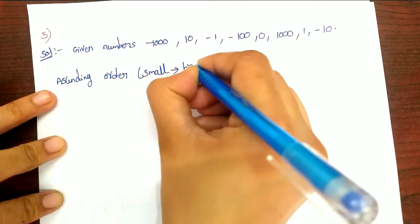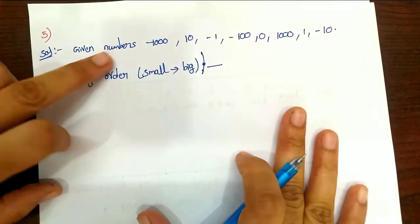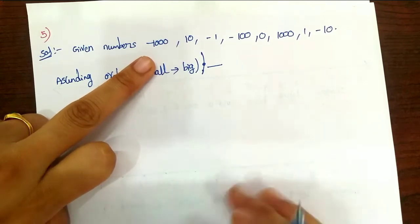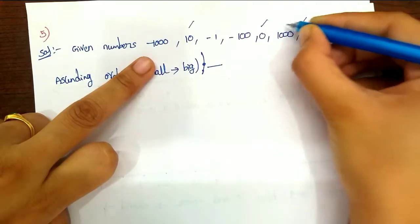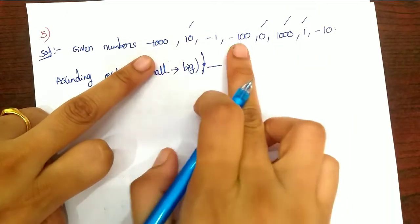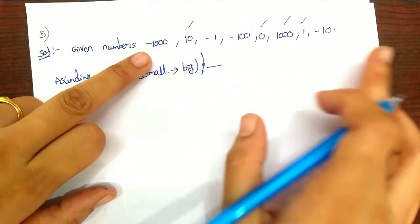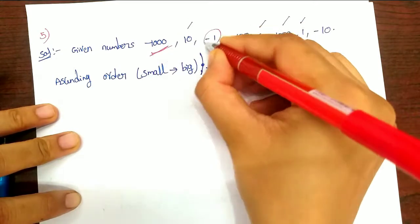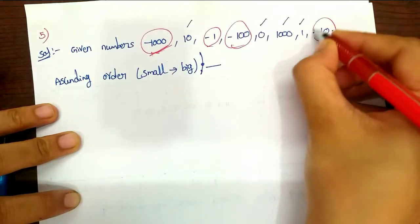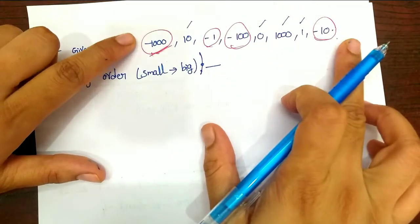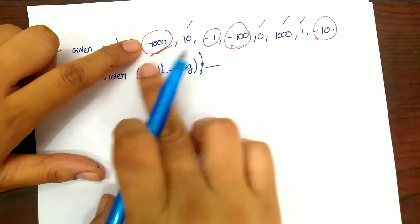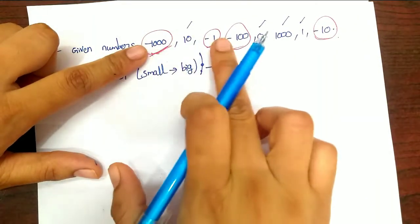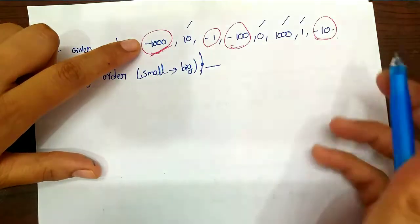Ascending order means small to big — smallest number first, biggest number last. For negative values, the larger the absolute value, the smaller the number. So among minus 1000, minus 100, minus 10, and minus 1, the order from smallest to biggest is minus 1000, minus 100, minus 10, minus 1. Then the positive values follow.